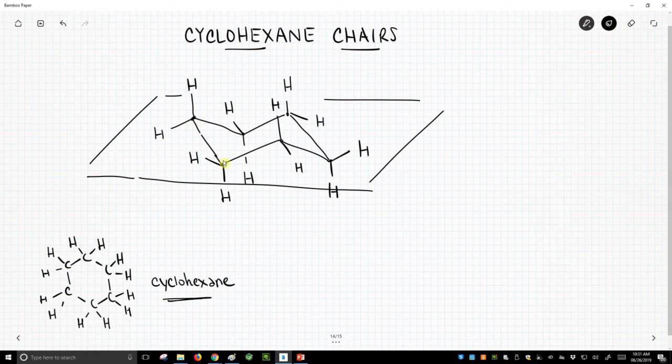Each carbon in the ring has two groups coming off of it. One is perpendicular to this plane. This is the axial group. The other one roughly falls within this plane that we've described. That is the equatorial group. So each carbon in the ring has an axial group and an equatorial group.